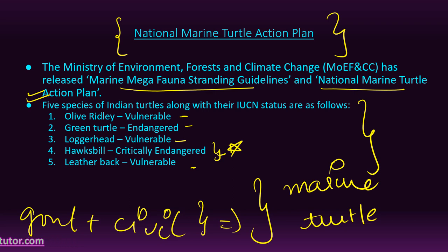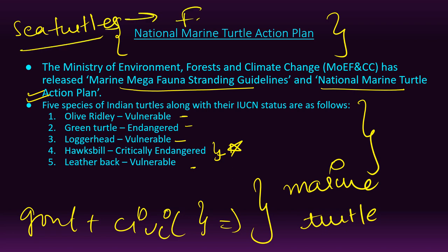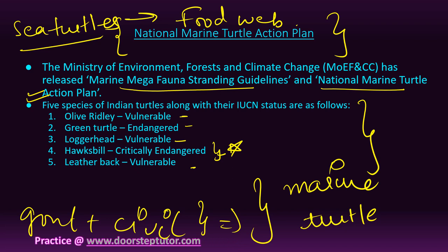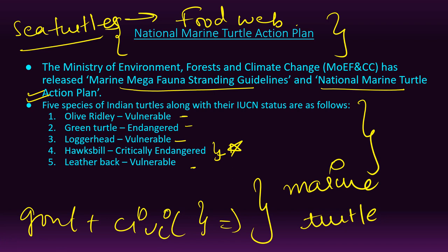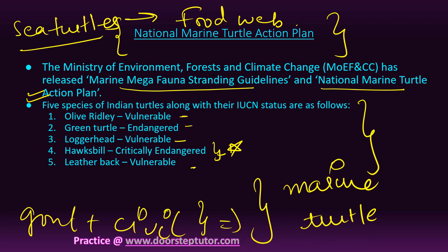Sea turtles have a very important role in the food web because they consume an assortment of prey including puffer fish, sponges, and sea grasses. They help in the transportation of nutrients from highly productive marine habitats like sea grass beds to energy-poor habitats like sandy beaches. The Green Turtle feeds on sea grass beds and crops grass, providing nursery for numerous fish and shellfish.